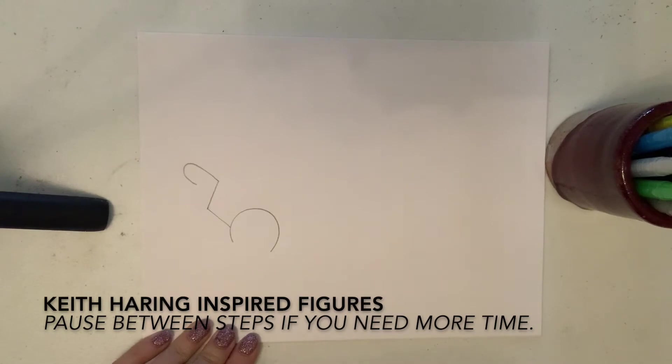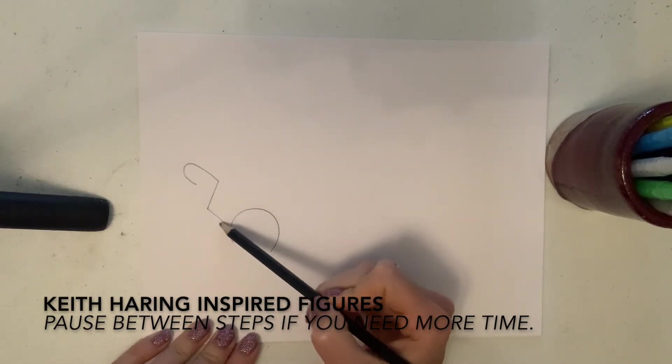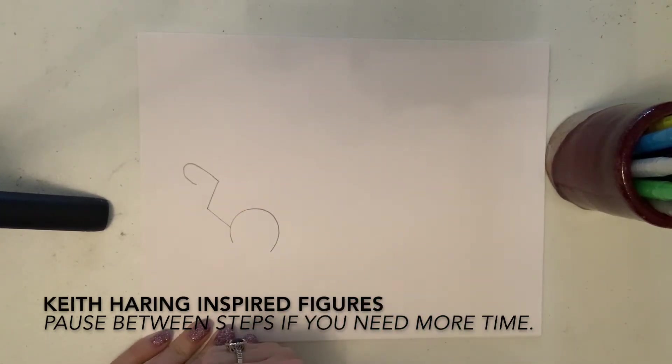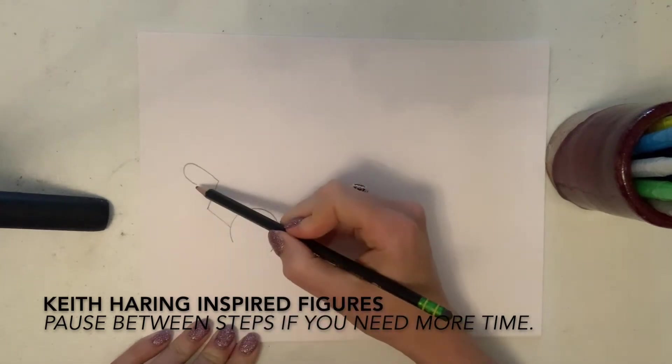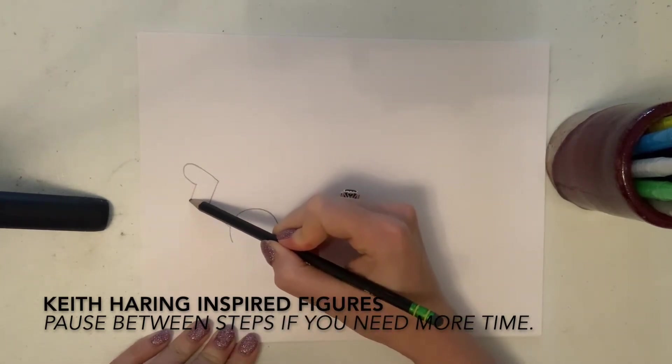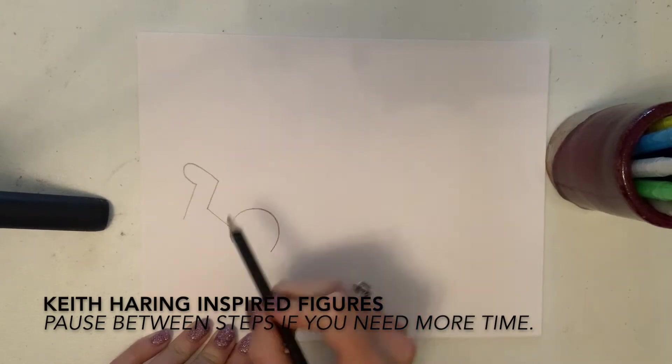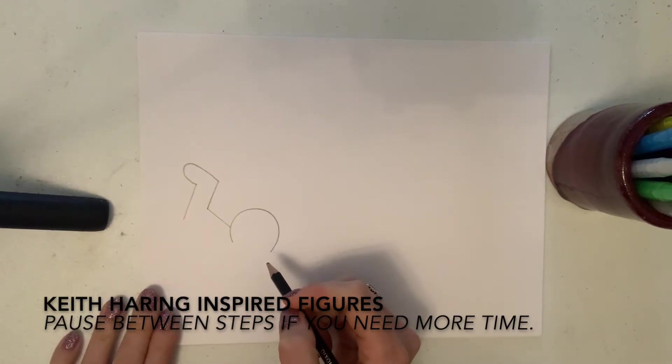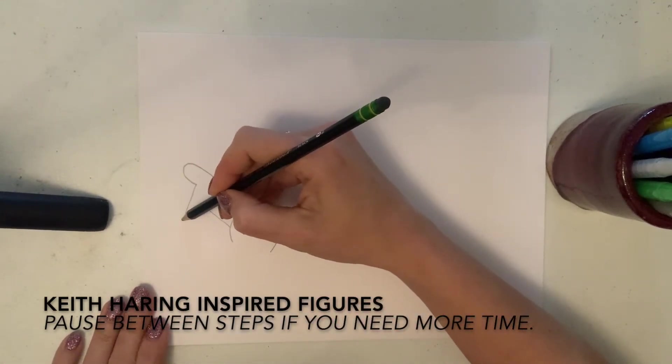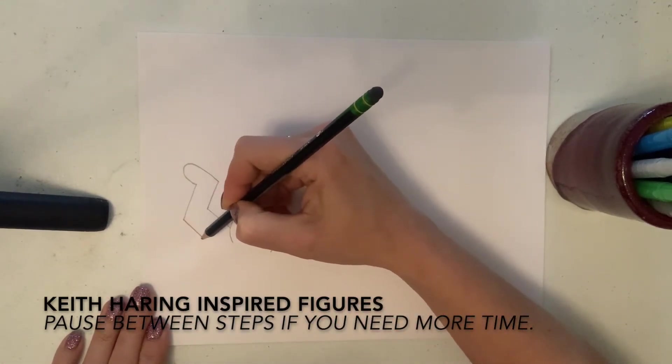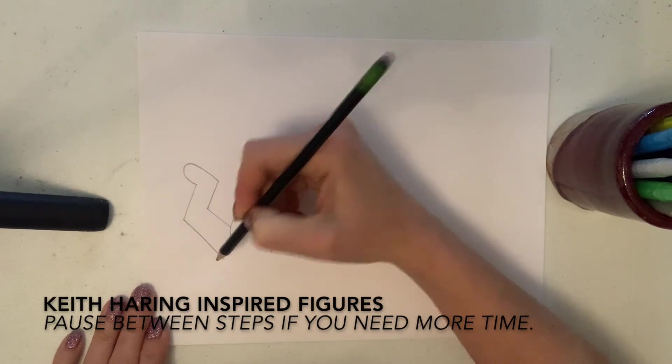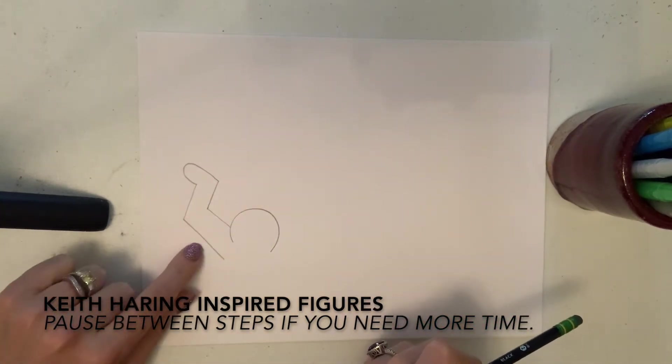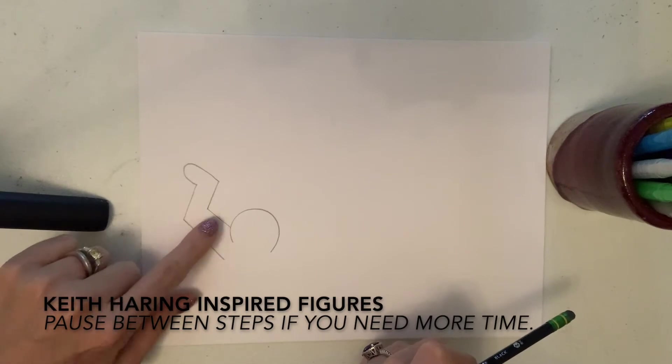Next we're going to follow the same direction that these other lines go to draw the bottom part of the arm. We're going to draw a diagonal line down and this one needs to be longer than the first one so that it will have room to bend back and come to the body. Next we're going to draw a diagonal line that comes down the same diagonal or parallel to the top of the arm.